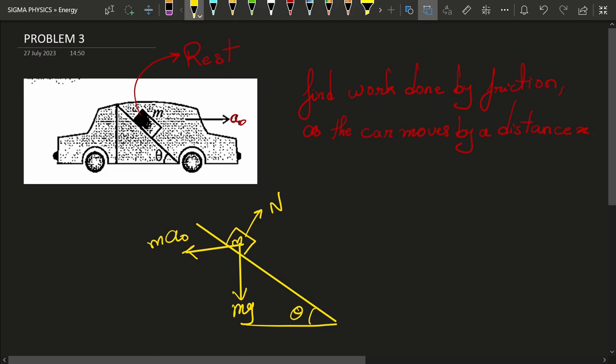Since the block is at rest in the car's frame of reference, its acceleration in the backward direction has to be a0. Now if I take the component of m a0 and m g along the plane, then what will I find?